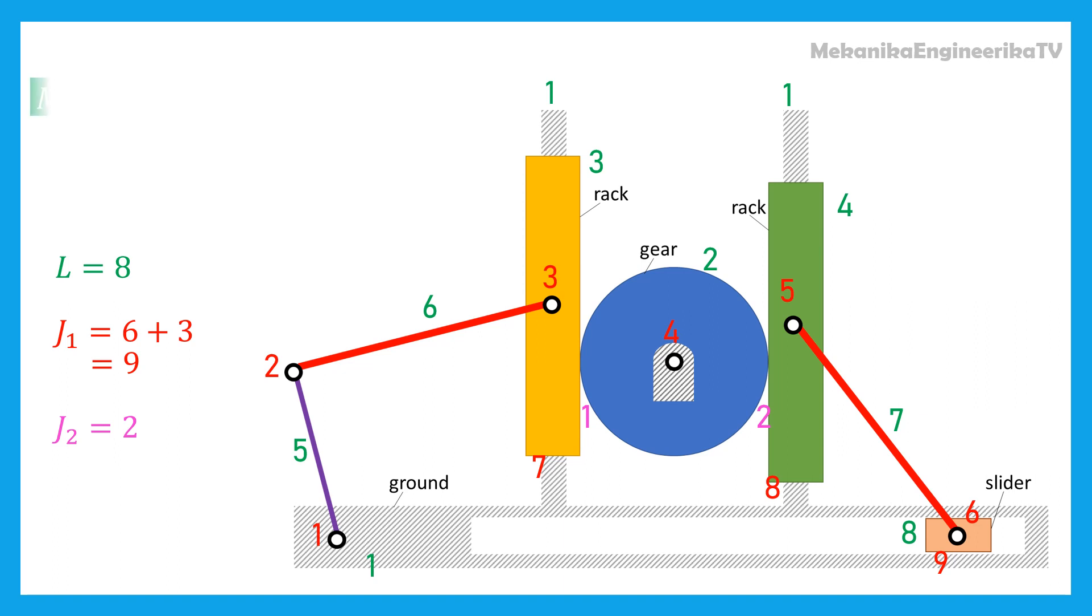Hence, mobility is equal to 3 times 7, minus 2 times 9, minus 2. The mobility of this mechanism is then equal to 1.